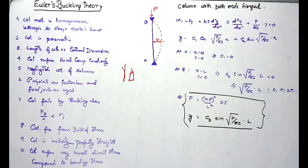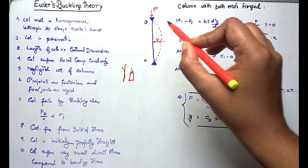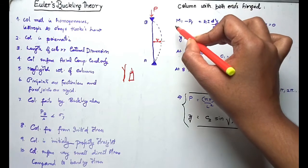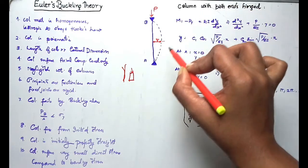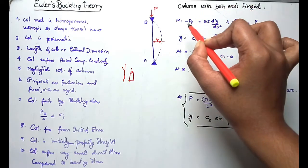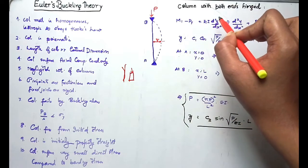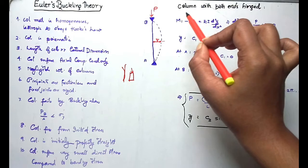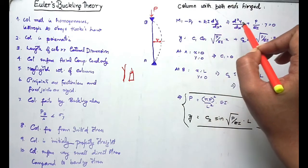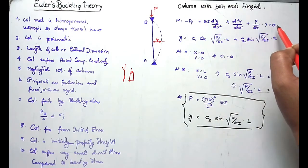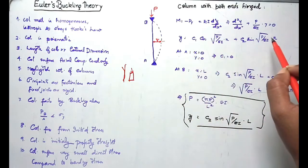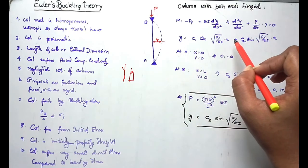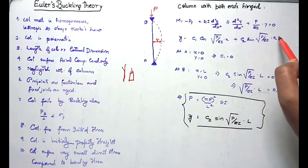The bending moment at a section is minus P·y. From the theory of simple bending, M equals EI times d²y/dx². So we can rewrite it as d²y/dx² + (P/EI)·y = 0. When we solve this differential equation, we get y = C1·cos(√(P/EI)·x) + C2·sin(√(P/EI)·x).